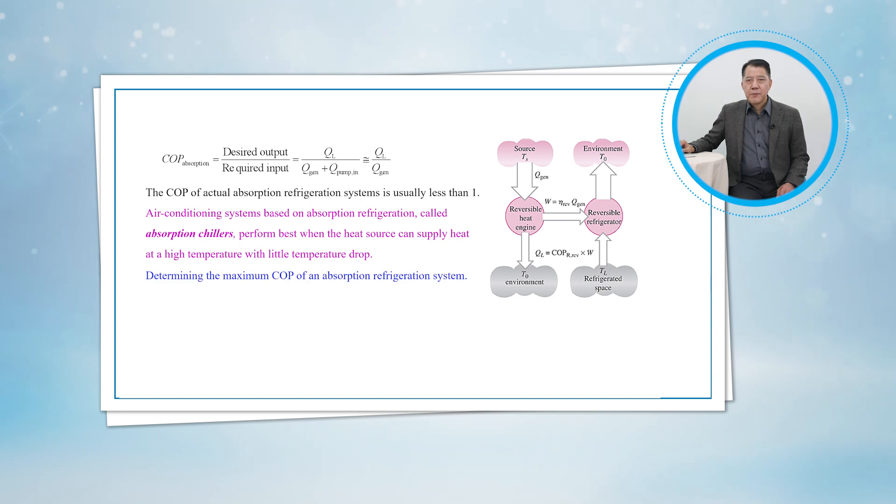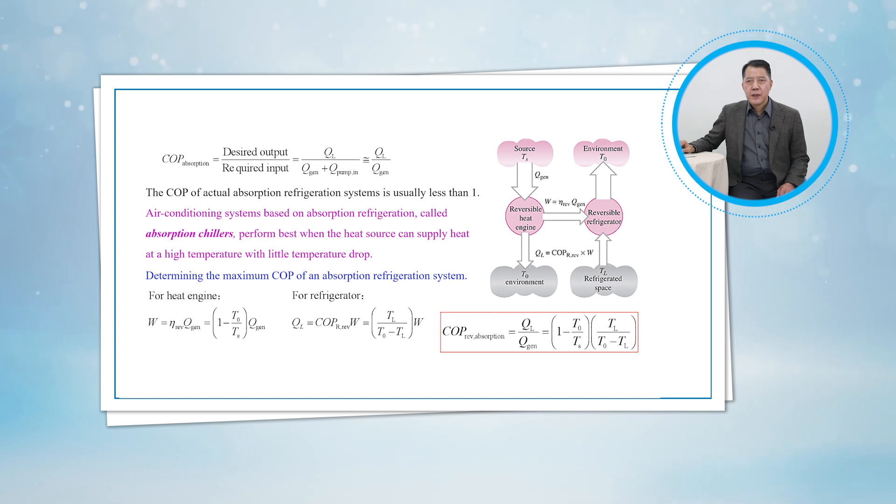The maximum COP of an absorption refrigeration system is determined by assuming that the entire cycle is totally reversible. The refrigeration system would be reversible if the heat from the source were transferred to a Carnot heat engine and the work output of this heat engine is supplied to a Carnot refrigerator to remove heat from the refrigerated space. Then the overall COP of an absorption refrigeration system under reversible conditions becomes as shown in the figure.